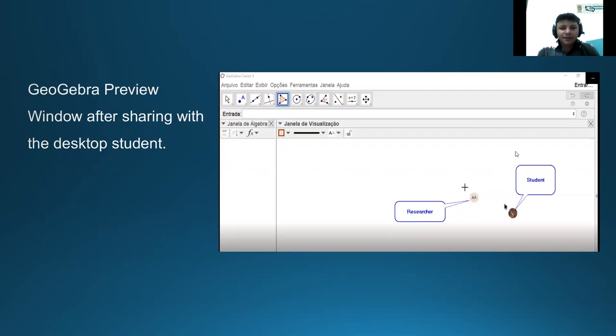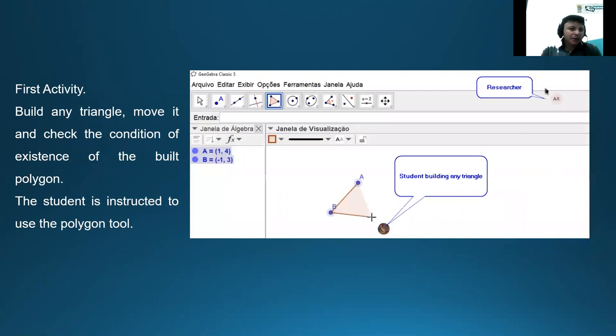Here we can see the research and the students entering in the same window of GeoGebra. And this aspect is possible because we are using the Microsoft Teams platform. Here the first activity, this is very simple, very easy. The research prompted the activity to build a triangle. In this moment, we can see the built polygon. This activity was developed when the research is interested in the student using the polygon tool.